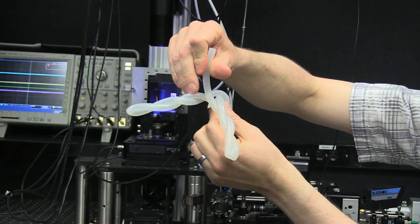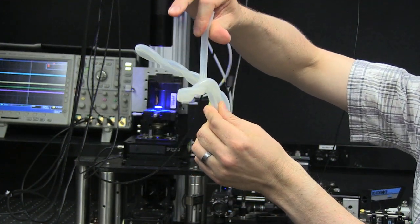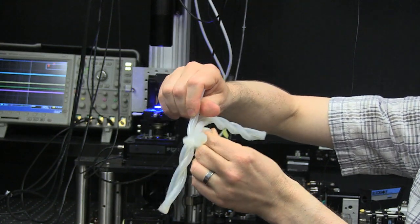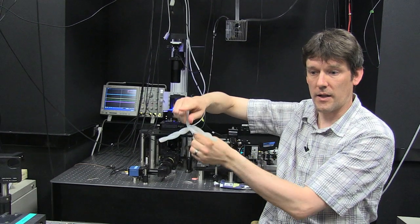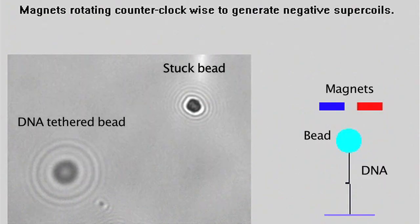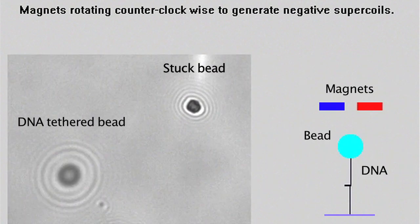As I wind up the bead, it comes closer and closer to the surface. By measuring the position of the bead along the optical axis, or the height of the bead if you will, I can determine the topology of the DNA.